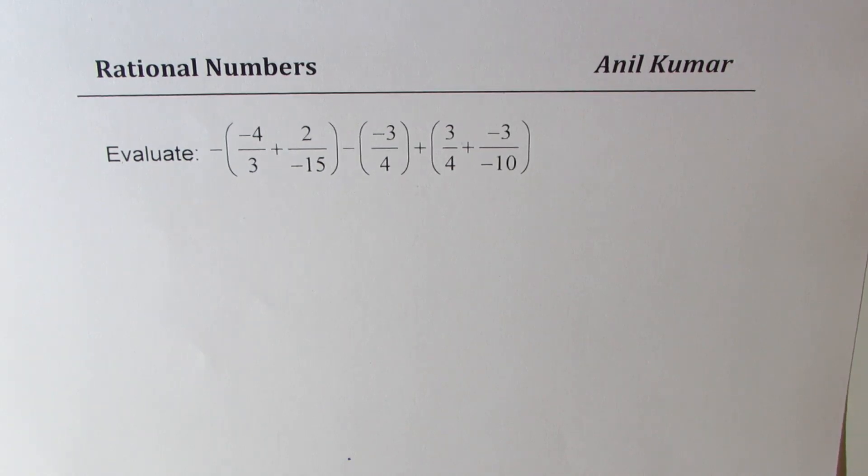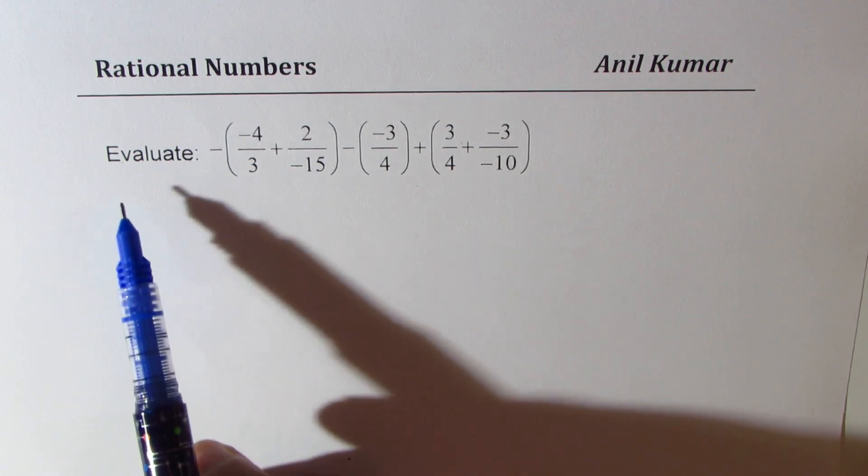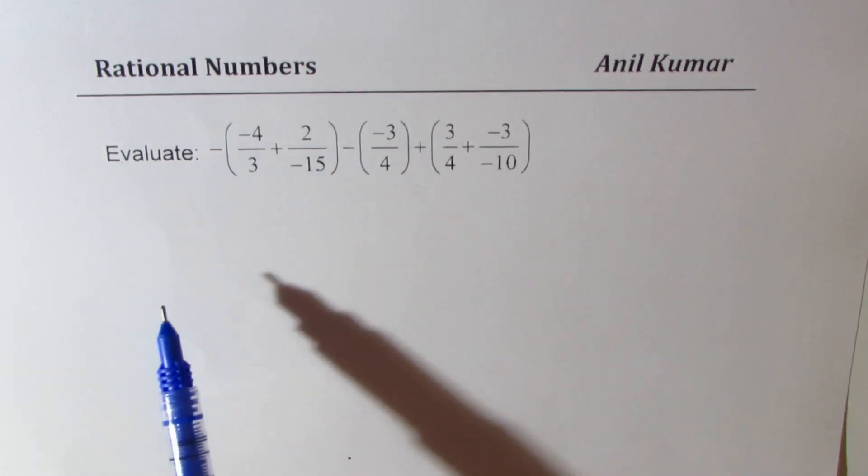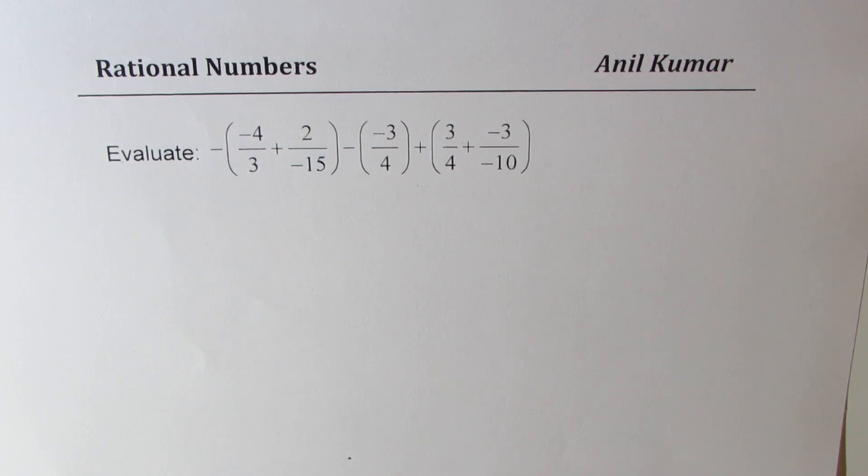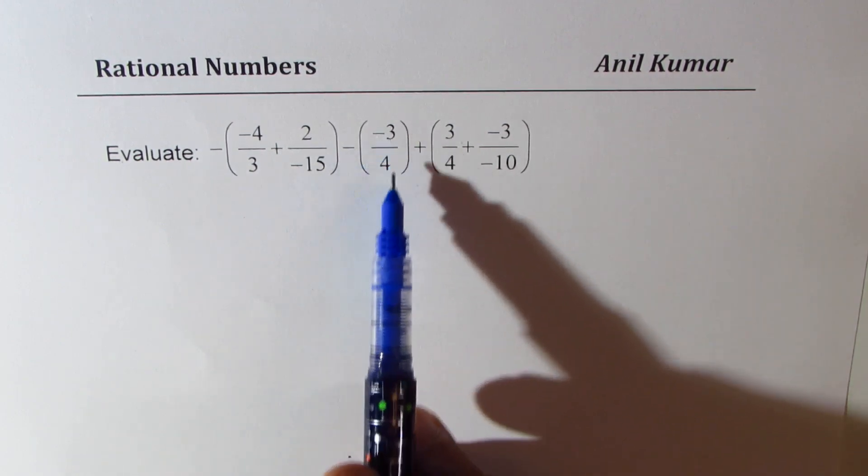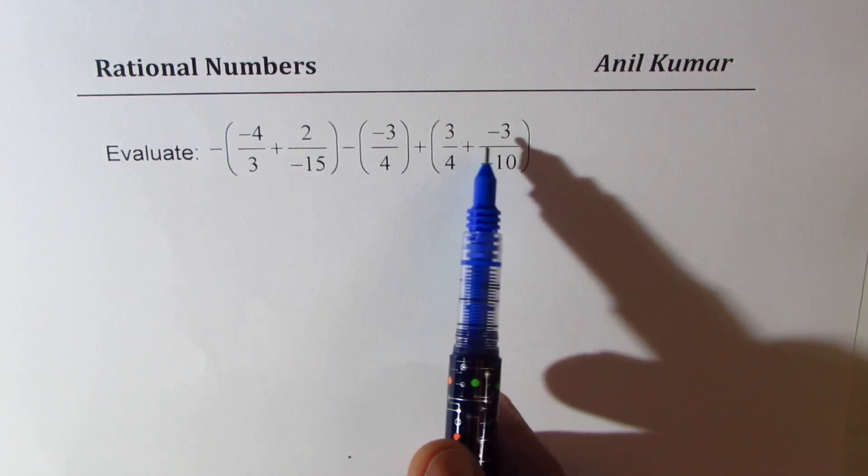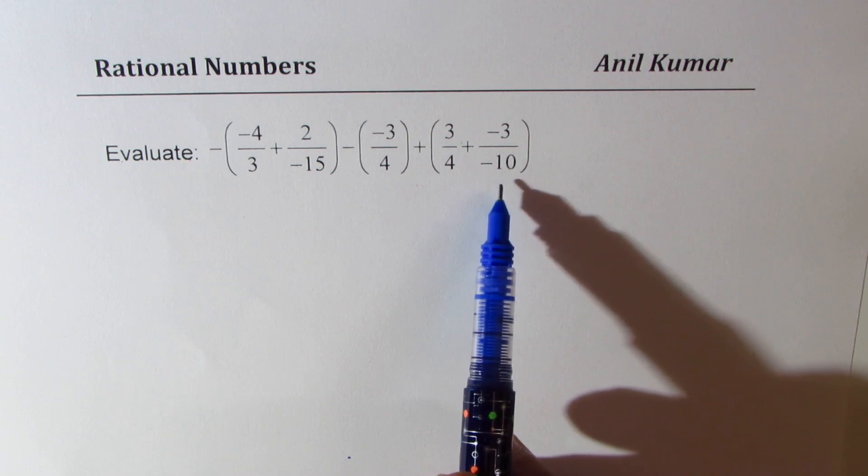I'm Anil Kumar. Let us see how to add rational numbers. We need to evaluate minus of, within brackets, minus 4 over 3 plus 2 over minus 15, minus minus 3 over 4, plus 3 over 4 plus minus 3 over minus 10.